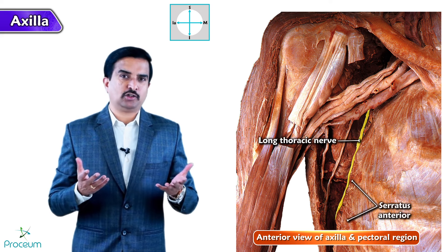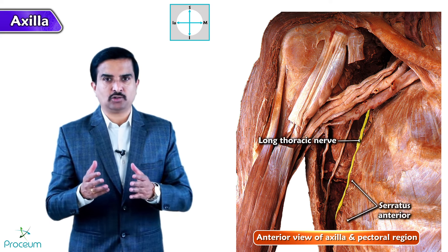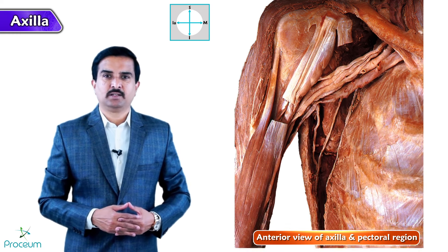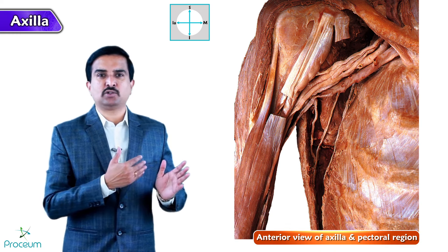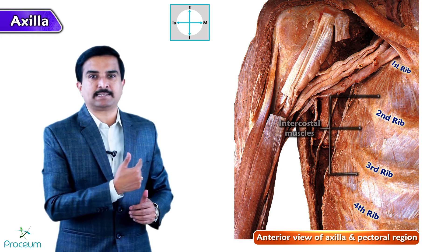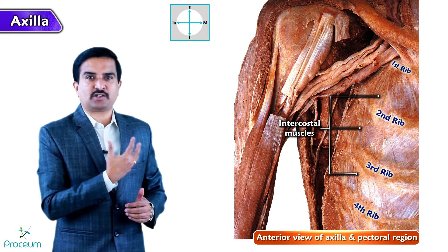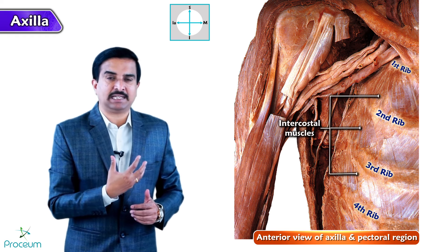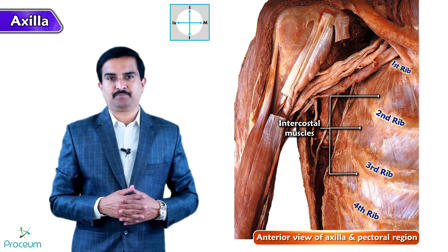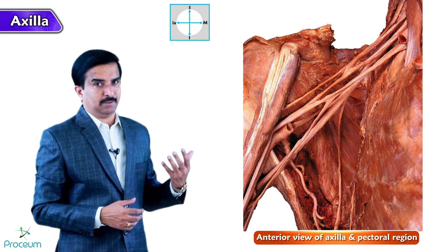Remember that the long thoracic nerve is also known as the nerve of Bell, and it supplies the serratus anterior muscle. In this specimen we can also appreciate the upper four ribs along with their intercostal muscles. We have understood all the structures present in this image. Now let us concentrate on another image.